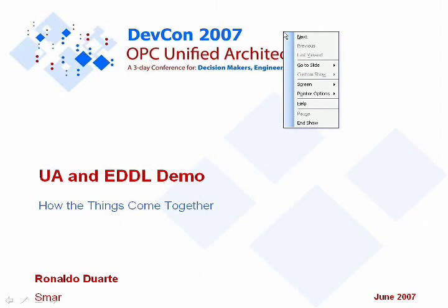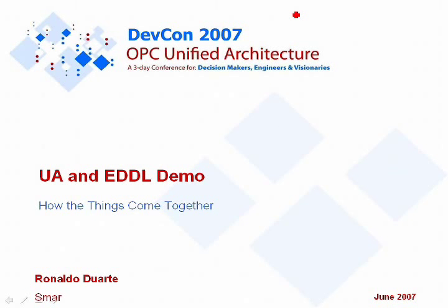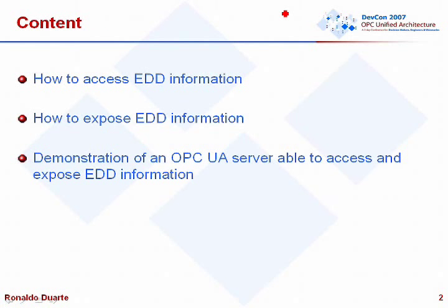Good morning. I'm going to do a quick demonstration of an OPC UA server that is able to expose all the data inside a device description. The server will get this data from the device description and populate the UA nodes with the information it was able to get from the DD. Before we go to the demonstration, I need to make some considerations about how the server was designed and what was needed to expose DD data to OPC UA clients.